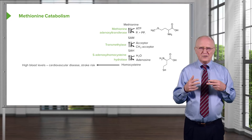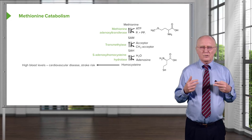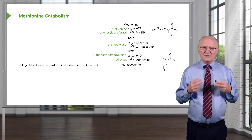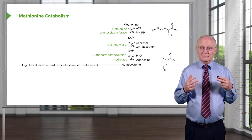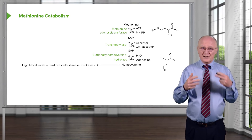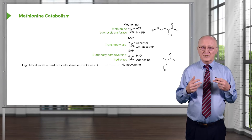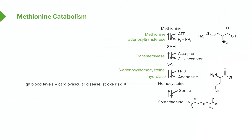Homocysteine is an important molecule with numerous health consequences. High blood levels of homocysteine are associated with cardiovascular disease and stroke risk, so physicians often measure this molecule when assessing health. Homocysteine then combines with serine to make cystathionine. Deficiency of cystathionine beta synthase, the enzyme catalyzing this reaction, leads to homocystinuria — a condition with severe health consequences given that elevated homocysteine is harmful.